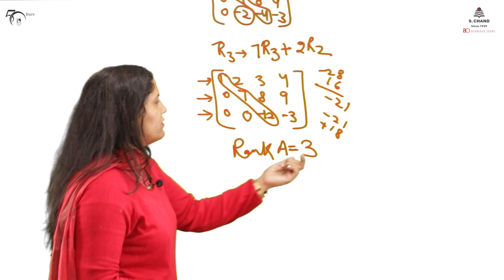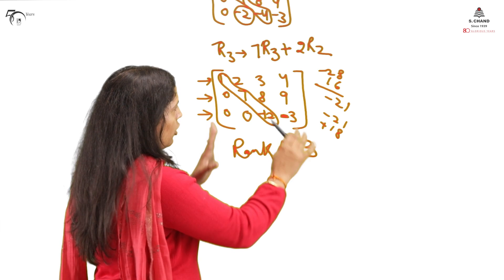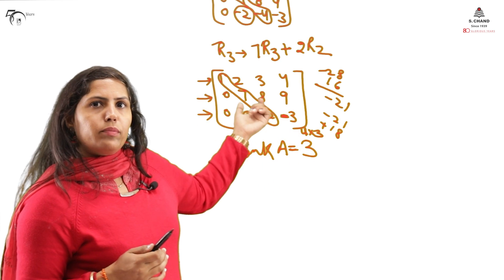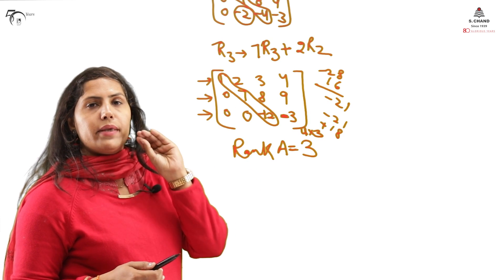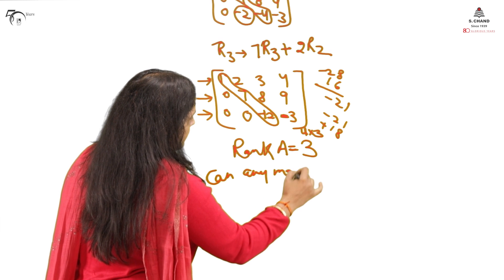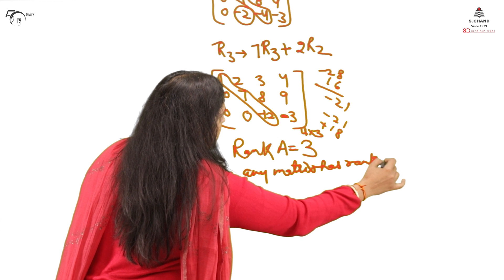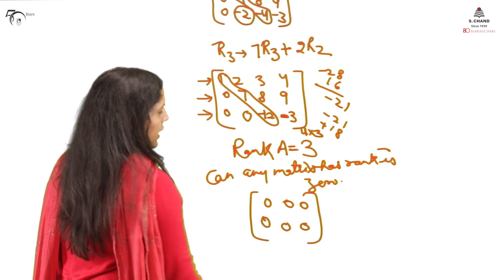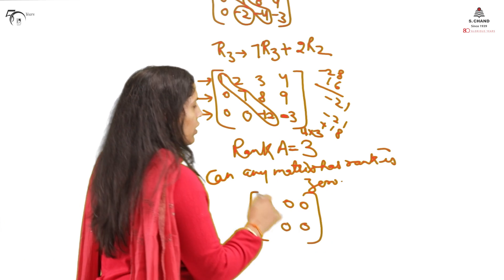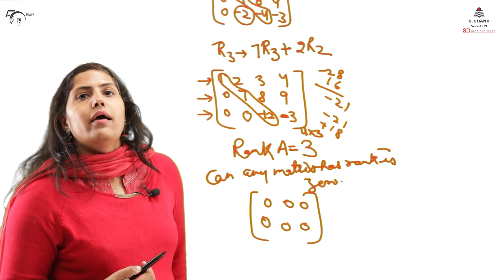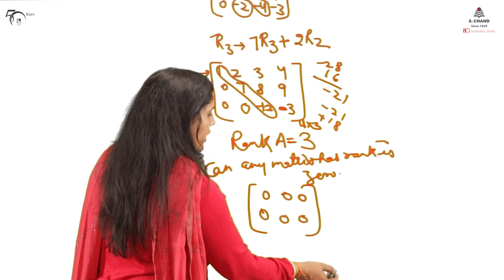Rank will never exceed the number of the square matrix. The order was 4 cross 3, but the biggest square matrix you can extract is 3 by 3. It means rank cannot be more than 3. Can any matrix have rank 0? Answer is yes. A matrix having all 0s is having rank 0. So this is the matrix with rank 0. Rank cannot be negative in any case.